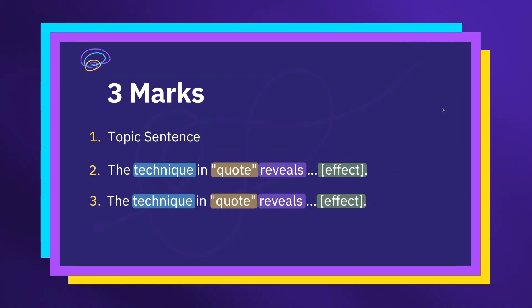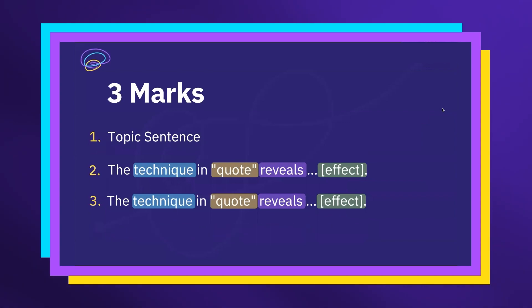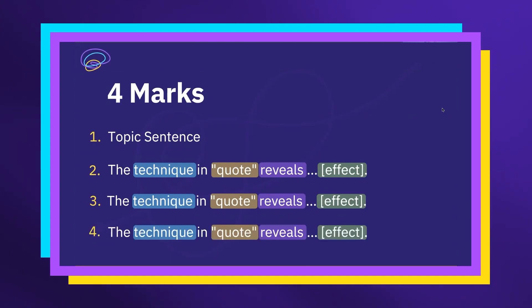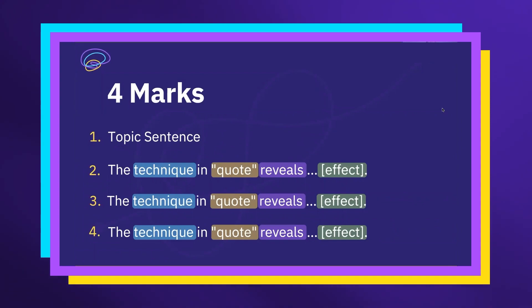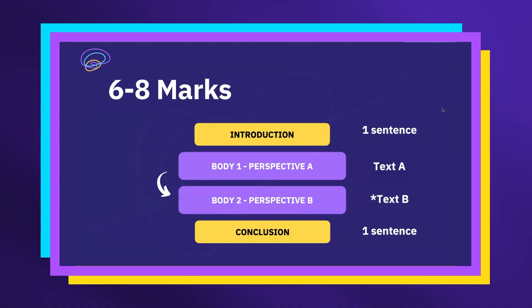What do your body paragraphs need to look like? They need to look like a three or four marker. If it's a six marker, you might be able to get away with just a three-mark paragraph for each one. So you do a topic sentence and two pieces of analysis. If you have time, aim for a topic sentence with three pieces of analysis. Don't worry about the link sentence — it's not that valuable and it won't be the difference between full marks or one less. I would have two of these paragraphs, each with a topic sentence and three sentences of analysis.